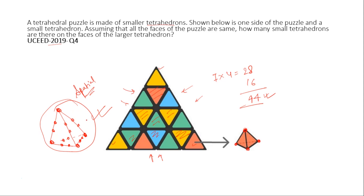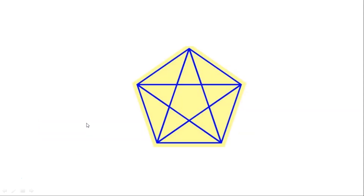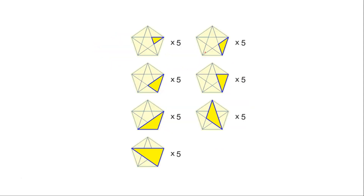Now one practice question for you: count the number of triangles. First, observe the figure — it is symmetric. You have to see any edge; it is symmetric. So when solving, start with a single component triangle from one edge. A single component: viewing from this edge gives 2 single-component triangles per edge. A pentagon has 5 edges, so 2 × 5 = 10 single-component triangles.